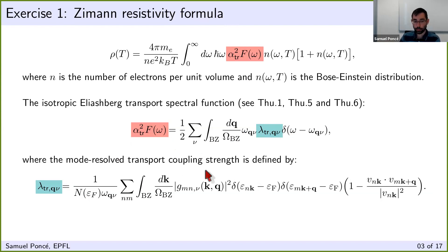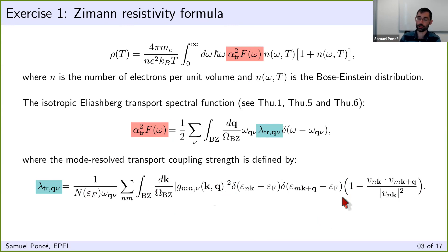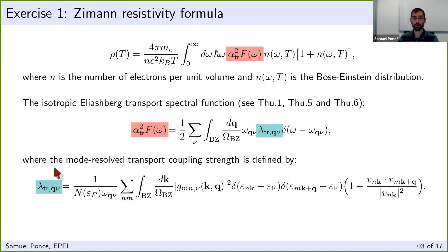This coupling strength is the same as the one used in superconductivity, with the only difference being a velocity factor — this is what makes it the transport version. To compute that spectral function you need to perform an integral over the electron-phonon matrix element over the Fermi surface. You might wonder why not just solve the Boltzmann transport equation since it's more accurate — the reason is that experimentally or with a model you may already have that function with the integral performed, giving a fast frequency integral.